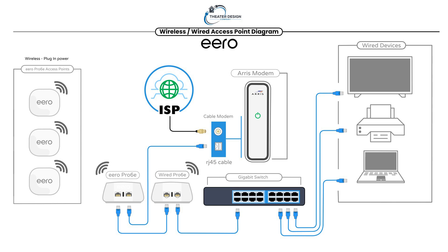I recommend watching example one and example two first. This example is a similar price point to example two, while example one is the highest price point. The big difference here is we're not using any wired access points — other than what I'm calling a wired bridge, though that's not quite the right terminology. We're just wiring a second Eero Pro 6 to where you might have an office or a switch. So let me go over the flow.